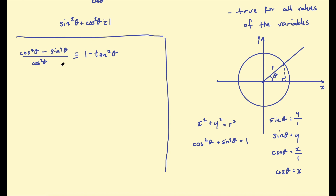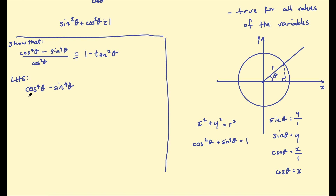For example, you might be given an identity such as: cosine to the power of 4 minus sine to the power of 4, divided by cosine squared theta, is equivalent to 1 minus tan squared theta. You'll be given this identity and asked to show that the left side is equivalent to the right. Start with the left-hand side and then think about how you want to simplify this.